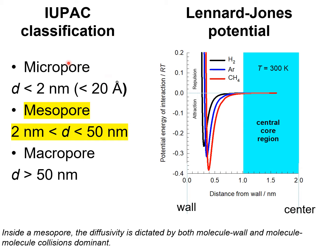To understand the reasoning behind this choice of pore dimensions to distinguish micropores and mesopores, we examine the potential energy of interaction between gas molecules and the pore wall for three different gas molecules: hydrogen shown in black, argon shown by the blue line, and methane shown by the red line.